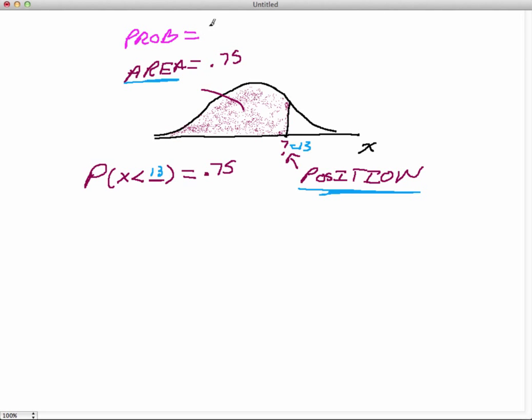So the probability in the normal distribution corresponds to the area under the curve. In the position right here, with the position, typically we're going to say that that's a quantile or a percentile. Many books call these quantiles. Ours doesn't choose to do that, but I'm going to remind you of that.